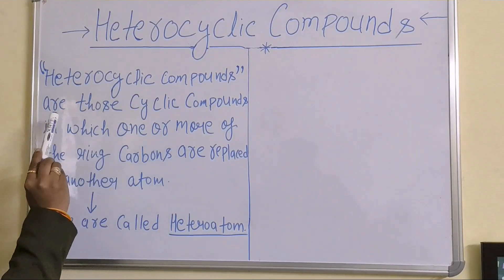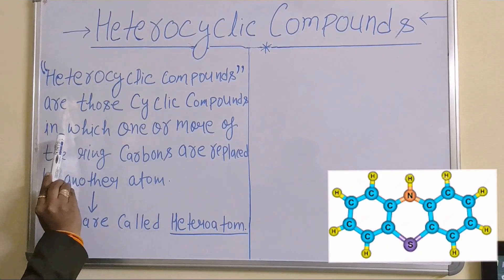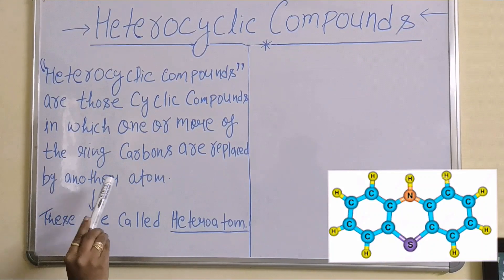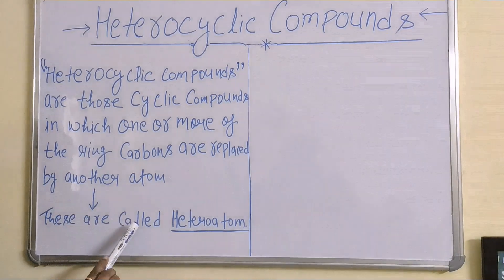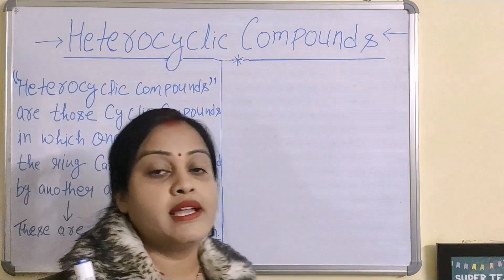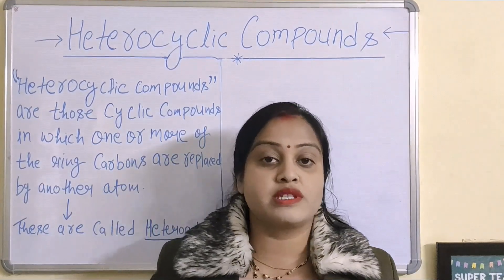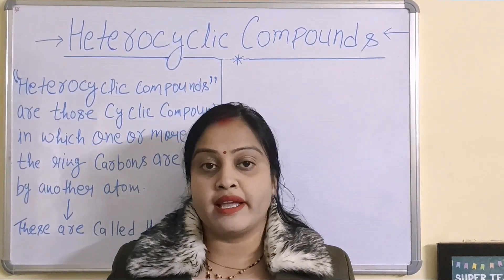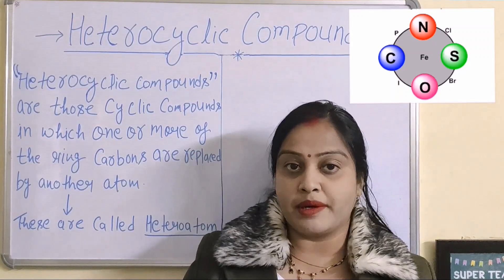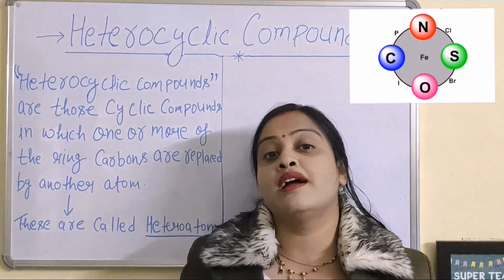Heterocyclic compounds are those cyclic compounds in which one or more of the ring carbon atoms are replaced by another atom. And these another atoms are called heteroatoms.